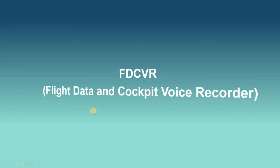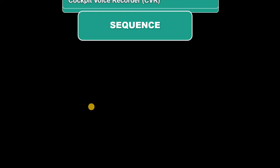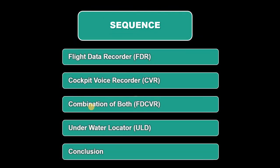Earlier, these flight data and cockpit voice recorders were called the black box. The sequence of our lecture would be like this: we would study about the flight data recorders, cockpit voice recorders, and the combination of both called flight data cockpit voice recorders. If an aircraft is crashed into the deep sea, for the purpose of locating the aircraft's FDCVR, flight data recorder, or cockpit voice recorder, we have employed an underwater locator beacon. We would study about that as well.